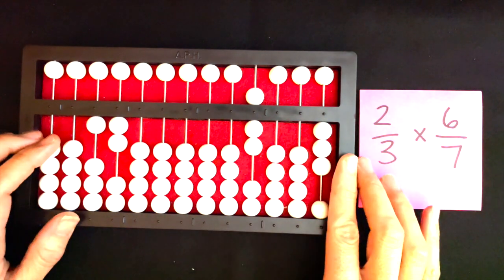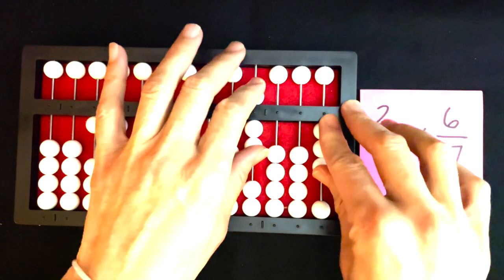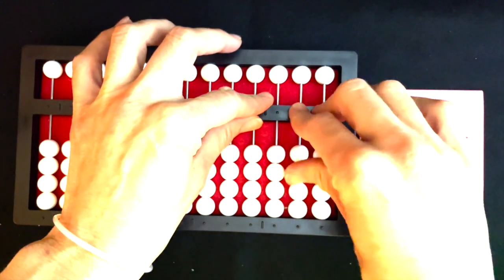I'll come over to the right-hand side of my abacus and multiply seven times three. Seven times three is twenty-one, so I'll clear these numbers and set twenty-one.